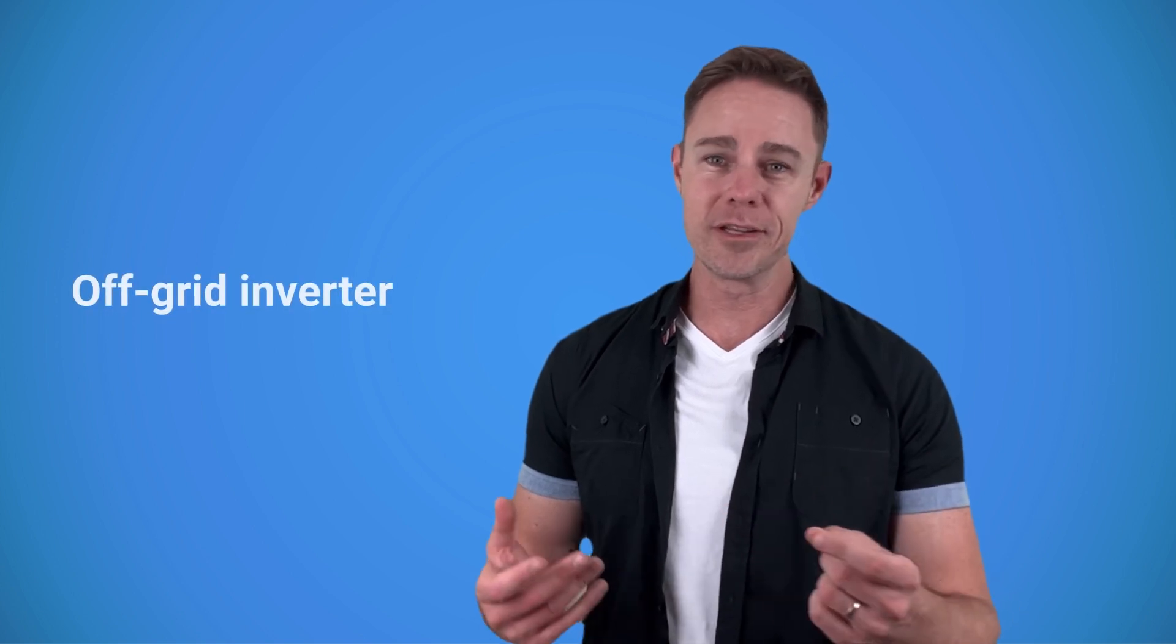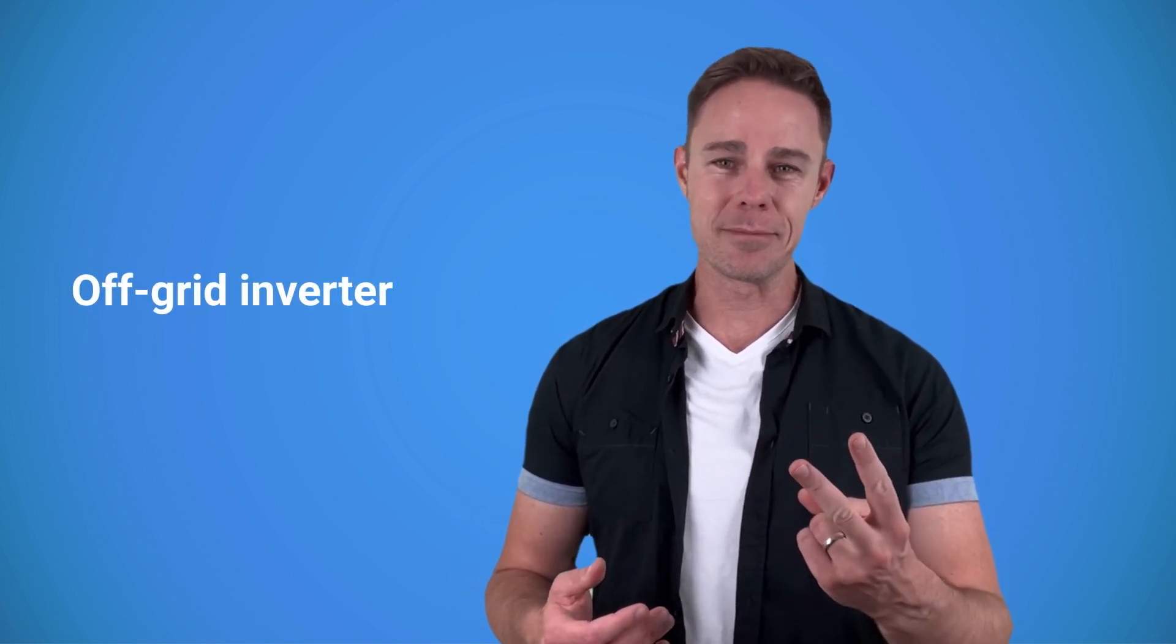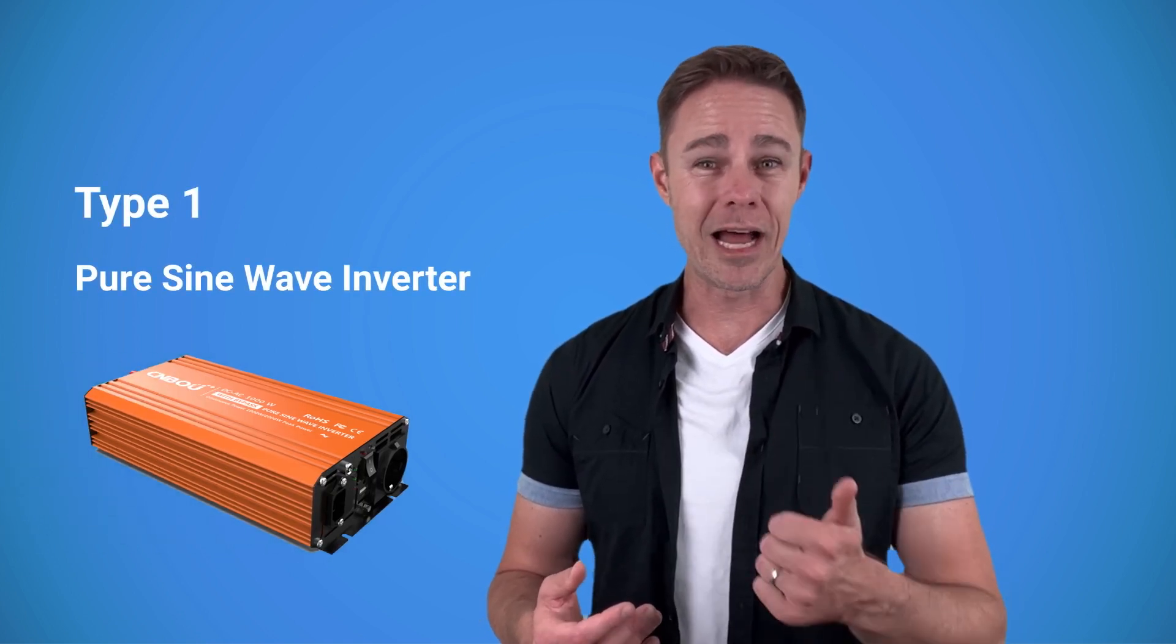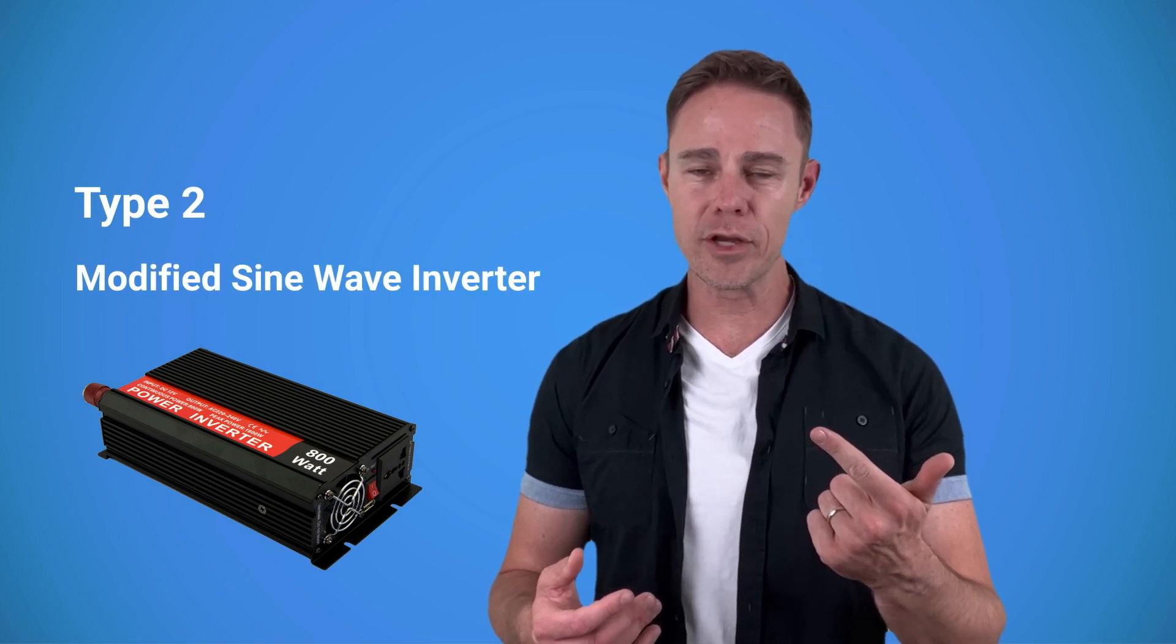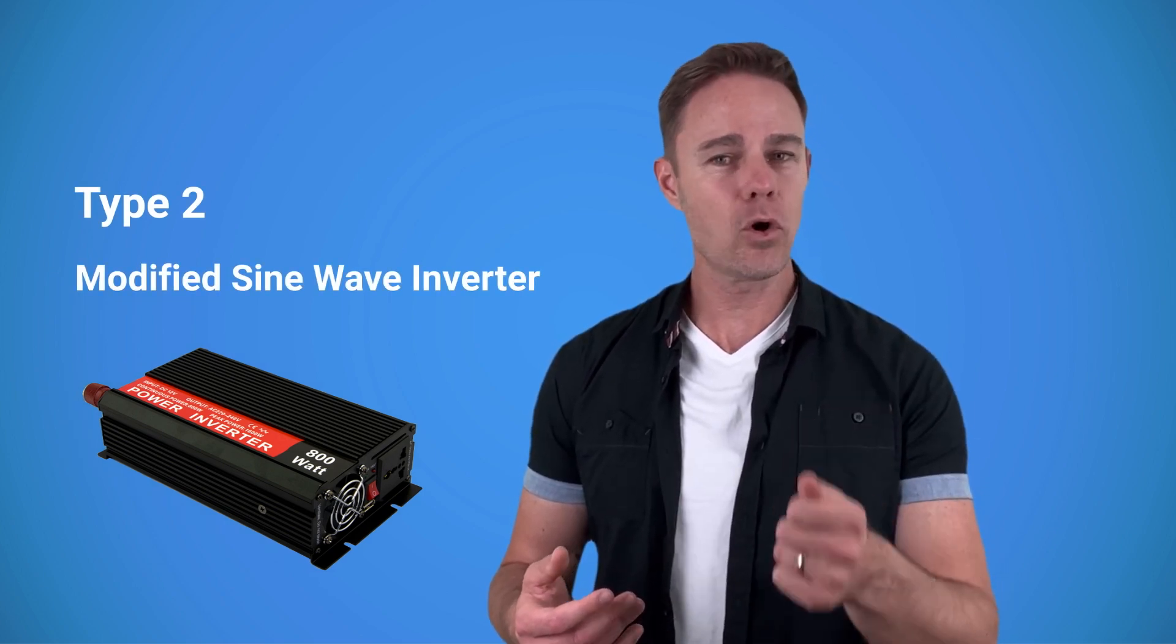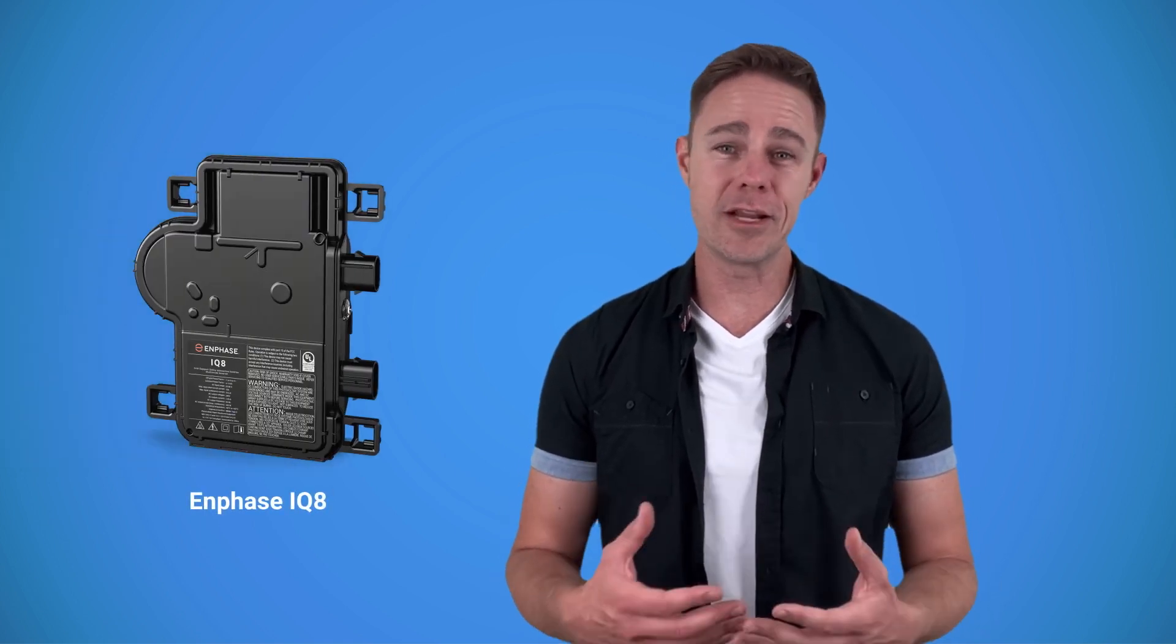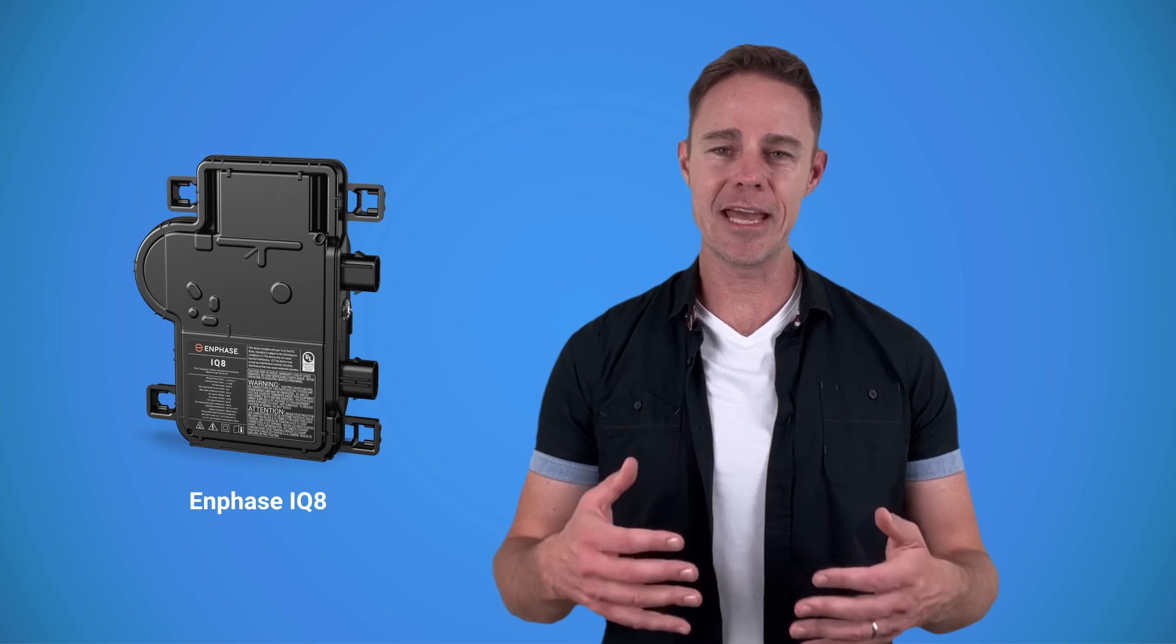For this configuration you would need an off-grid inverter. There are two types that are commonly used: the pure sine wave inverters that produce cleaner and more reliable electricity, and the modified sine wave inverters which are cheaper but can cause interference. For example, a radio may buzz a little when it's turned on. They're also not suitable for sensitive electronics such as medical equipment. The latest models of micro inverters such as the Enphase IQ8 can also be used in off-grid and hybrid systems, but again they can only support AC batteries.